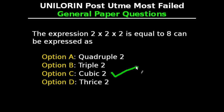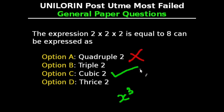In mathematics, when a number is raised to the power of 3 — let's say x raised to the power of 3 — it is called x cubed. So cubic 2 is the correct answer. Quadruple means 4, so that's out of the question. Triple 2 and thrice 2 are not terms used mathematically. So the correct answer is cubic 2.